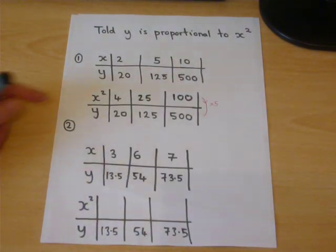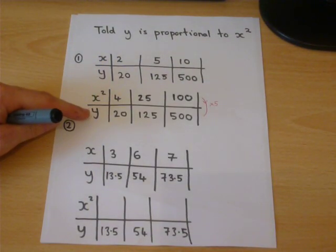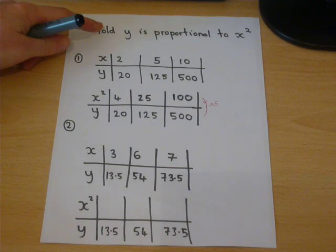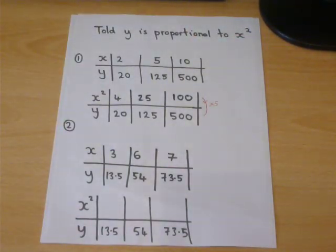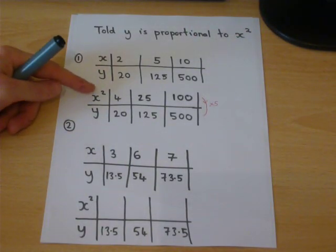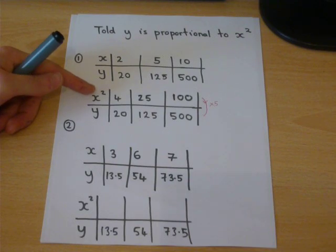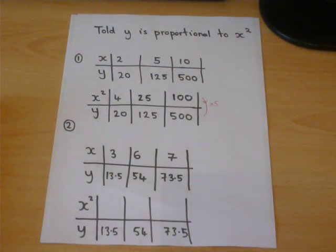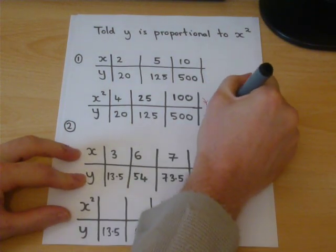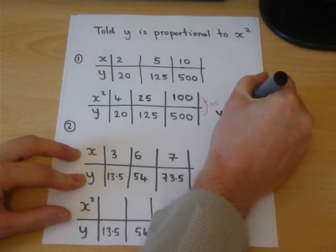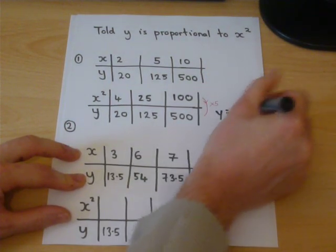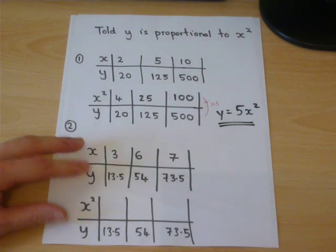But it links x squared and y. We were told the pattern involved y and x squared. That is where we knew to work out the x squareds and compare those to y. So the rule is that to get y, we do 5 lots of x squared.